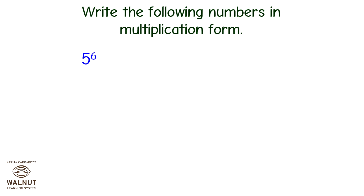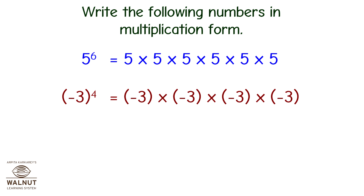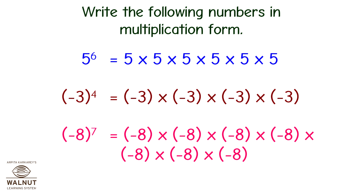Write the following numbers in multiplication form. 5 raised to 6: the index is 6 and the base is 5, so we multiply 5 by itself 6 times. Minus 3 raised to 4: the index is 4 and the base is minus 3, so we multiply minus 3 by itself 4 times. Minus 8 raised to 7: the index is 7 and the base is minus 8, so we multiply minus 8 by itself 7 times.